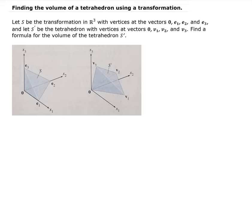In this example we want to find the volume of a tetrahedron using a transformation. Let S be the tetrahedron in R3 with vertices at the vectors 0, e1, e2, and e3. And let S prime be the tetrahedron after the transformation, where the vertices are at vectors 0, v1, v2, and v3. We want to find a formula for the volume of the tetrahedron S prime.